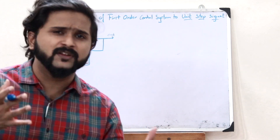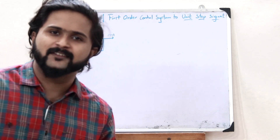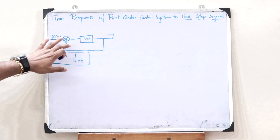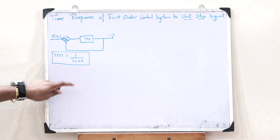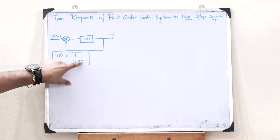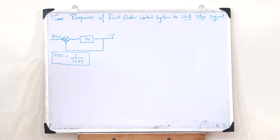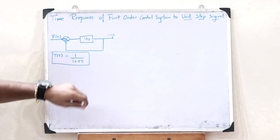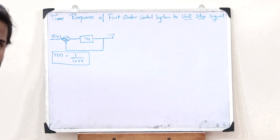In the previous video, I've explained what you refer to as a first order control system. If you haven't watched that video, please do watch it — I'll leave the link in the description below. A first order control system is a control system in which the maximum power of s in the denominator is 1. This is the general representation of a transfer function of a first order control system.